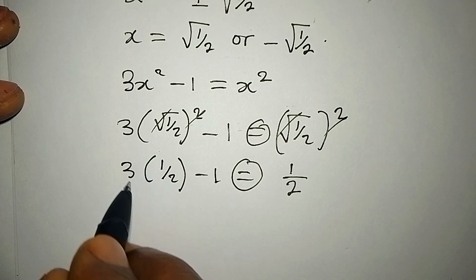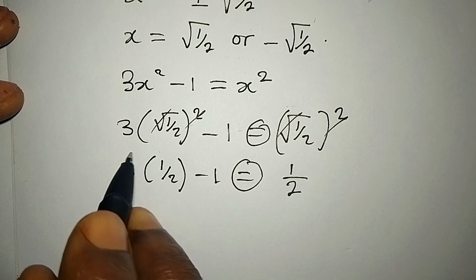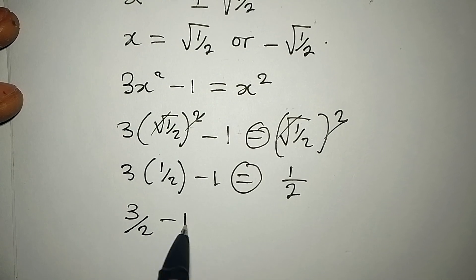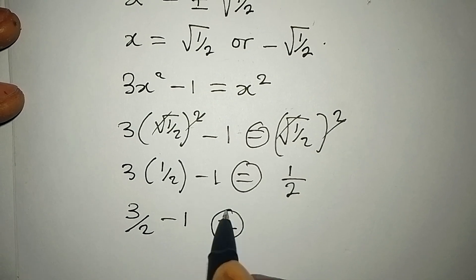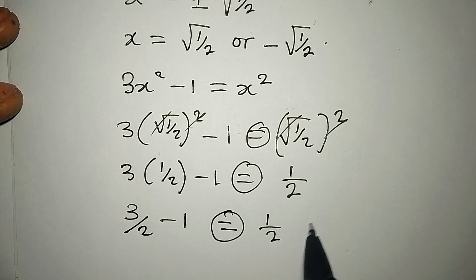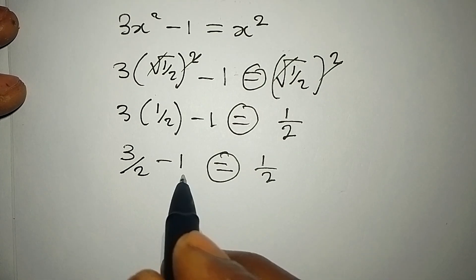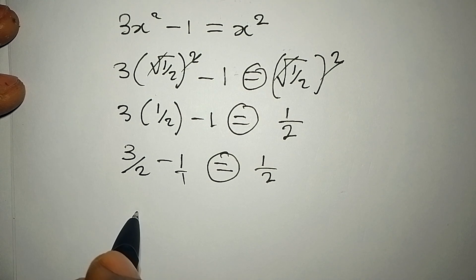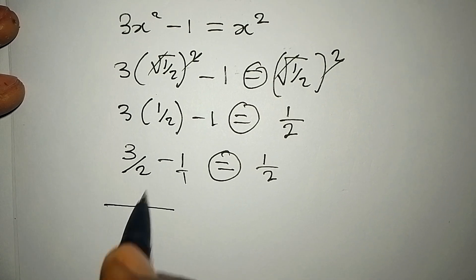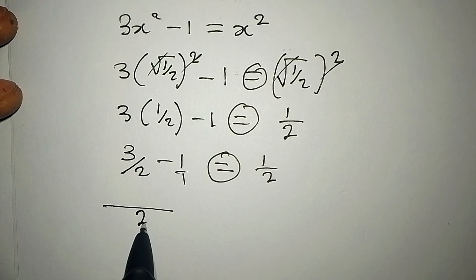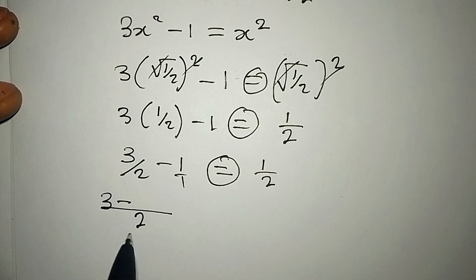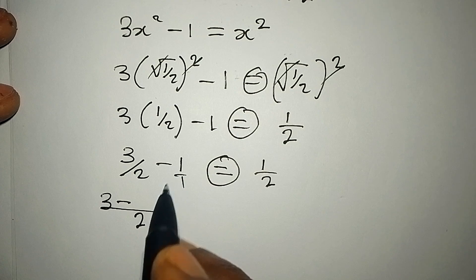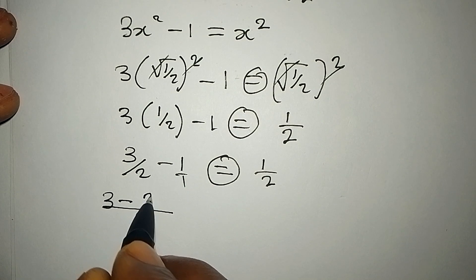Now from here we can open this bracket, so we get 3/2 - 1. Do you think this is equal to 1/2? Let's keep going. This is over 1 as well, right? The LCM of the left-hand side is 2. Then 2 divided by 2 is 1 times 3 is 3, minus 2 divided by 1 is 2 times 1 is 2.